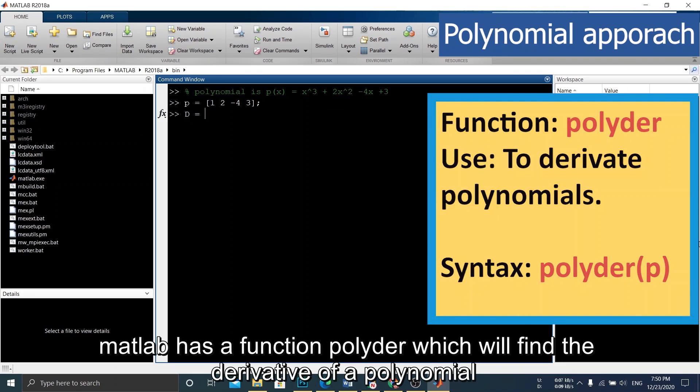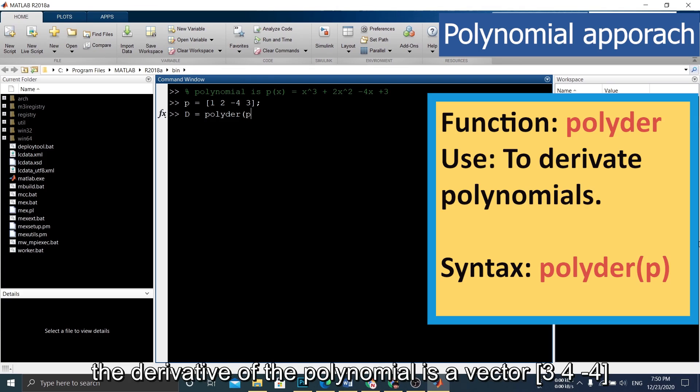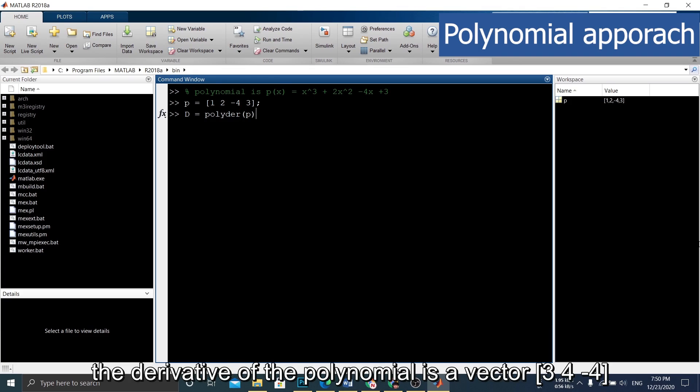MATLAB has a function polyder which will find the derivative of a polynomial. The derivative of the polynomial is a vector [3, 4, -4].